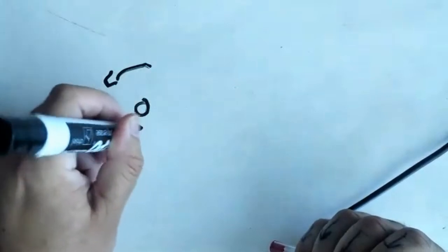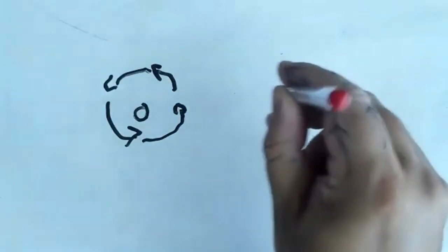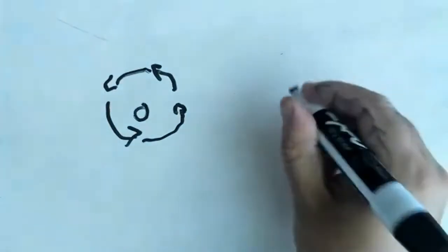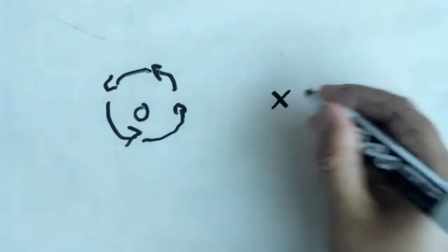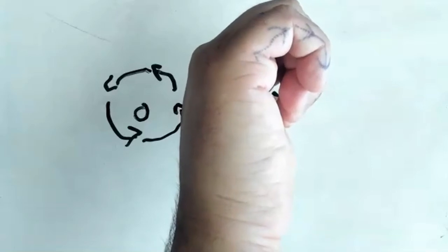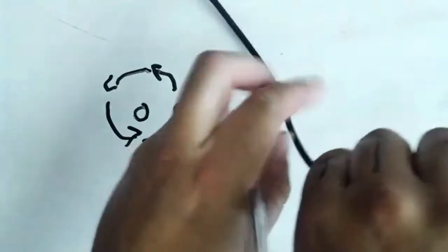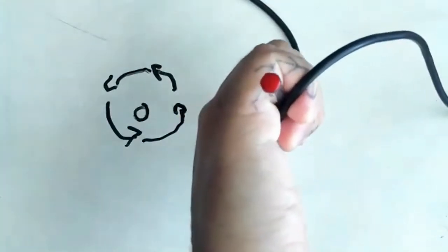If the opposite is true — if the current is going into the page — the way we draw that is with an X, meaning it's going away from you into the screen. Using the right-hand rule, I'd have my thumb pointing down into the page, and when I do that, the arrows on my fingers curl in a clockwise way. So if the electricity is going into the page, the magnetic field wraps around in a clockwise direction. You draw it like this.